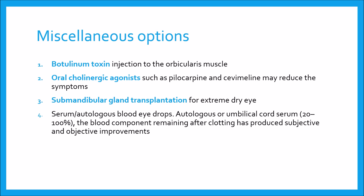Miscellaneous options include botulinum toxin injection to the orbicularis muscle, which may help control the blepharospasm that often occurs in severe dry eye. Injected at the medial canthus, it can also reduce tear drainage, presumably by limiting lid movement. Oral cholinergic agonists such as pilocarpine 5 mg four times a day and cevimeline may reduce the symptoms of dry eye and dry mouth in patients with Sjögren's syndrome.